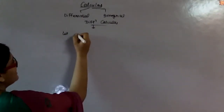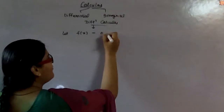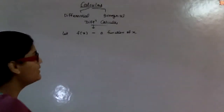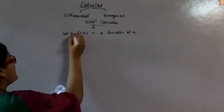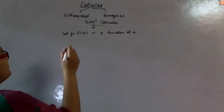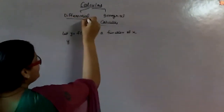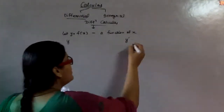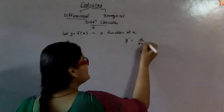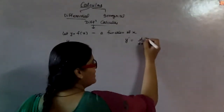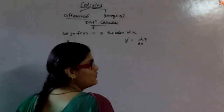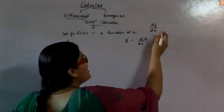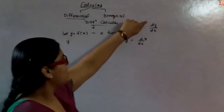Let us suppose we have f(x), a function of x, and we assume f(x) as y. The differentiation of y is denoted by y-dash. y-dash means differentiation of y — this is the symbol for differentiation of y with respect to x. If we want to differentiate y with respect to z or any other variable, then we write it accordingly.